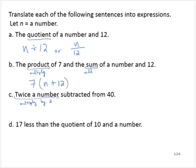Now, we have to be careful with the subtracted from. When we see subtraction from, we know it's a subtraction, but we have to change the expected order. So twice a number subtracted from 40 is 40 minus 2n.